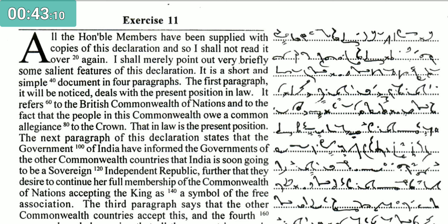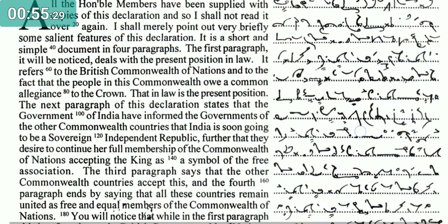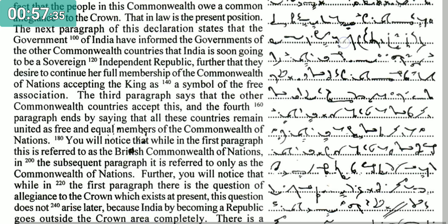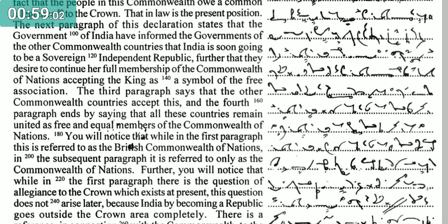The next paragraph of this declaration states that the government of India have informed the governments of the other Commonwealth countries that India is soon going to be a sovereign independent republic, and further that they desire to continue her full membership of the Commonwealth of Nations, accepting the King as a symbol of the free association.